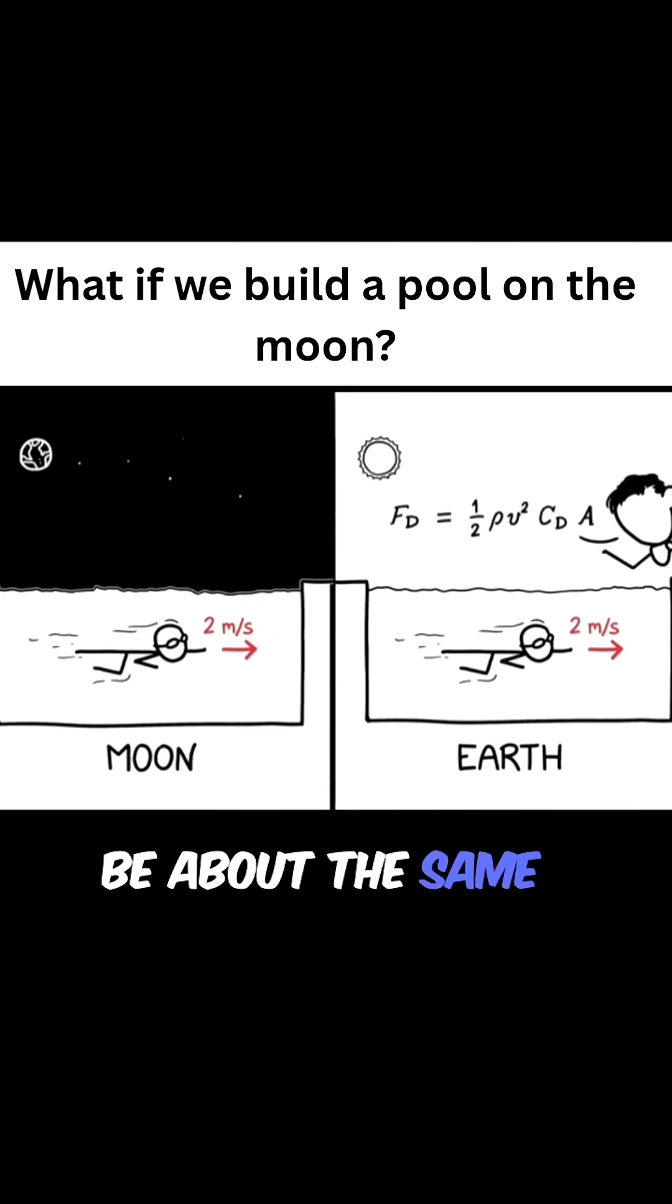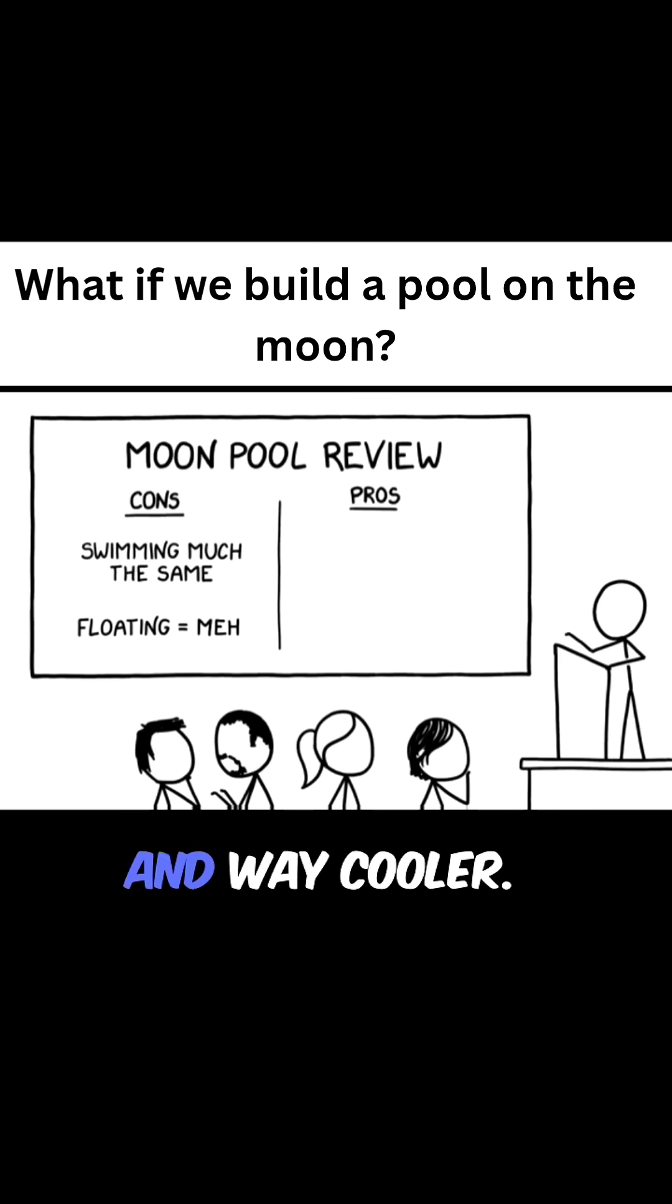The top speed of a submerged swimmer would be about the same on the moon as here, about 2 meters per second. Everything else would be different and way cooler.